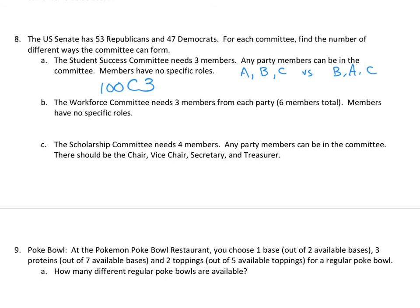Part B: the Workforce Committee needs three members from each party — six members total, no specific roles. Three Republicans come from the 53 Republicans: 53C3. Three Democrats come from the 47 Democrats: 47C3. Multiply those together: 53C3 times 47C3. This is the same logic as picking three hearts from one group and three face cards from another — just with party members instead of cards.